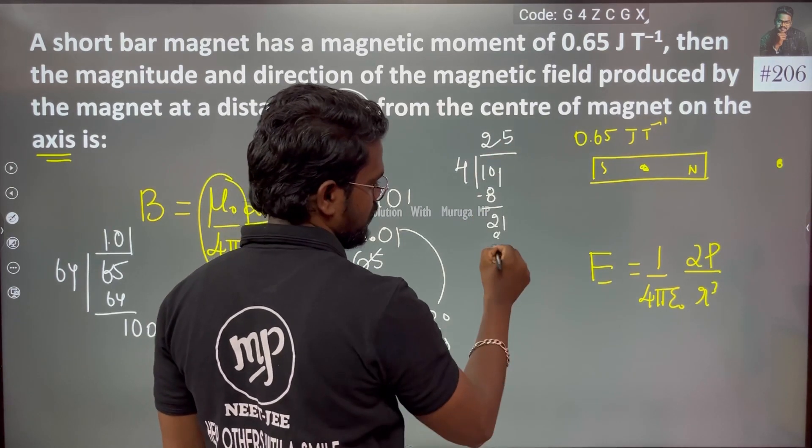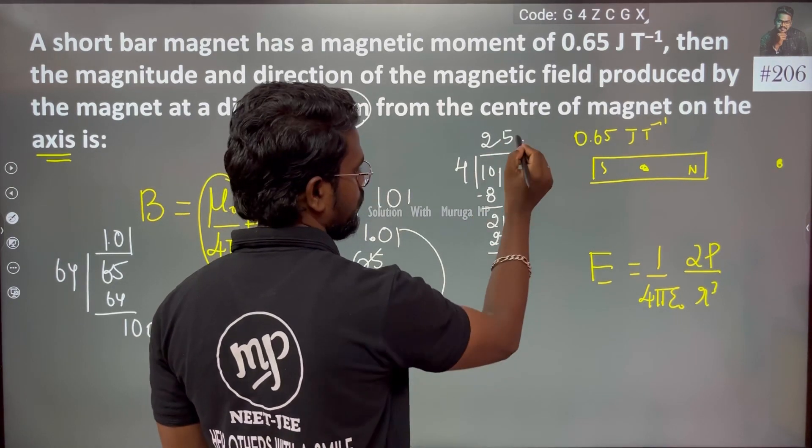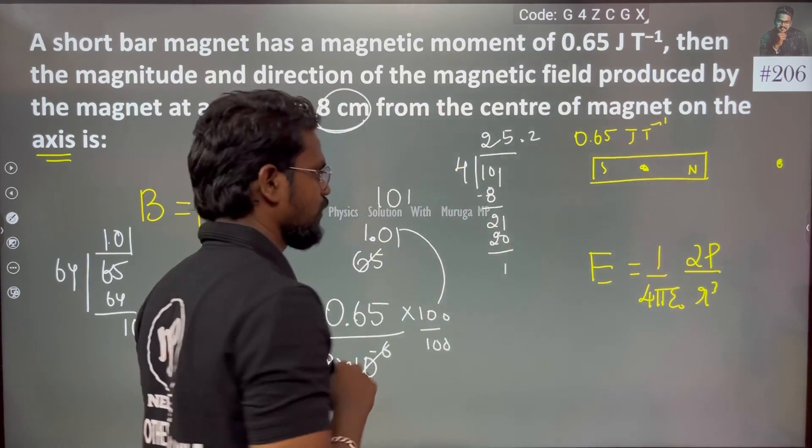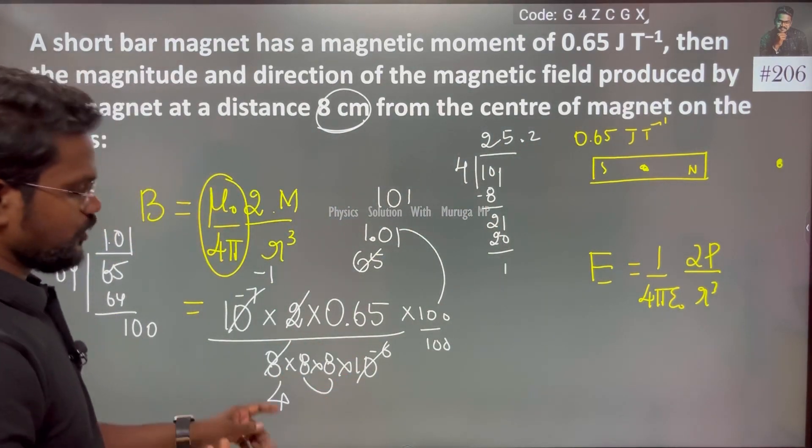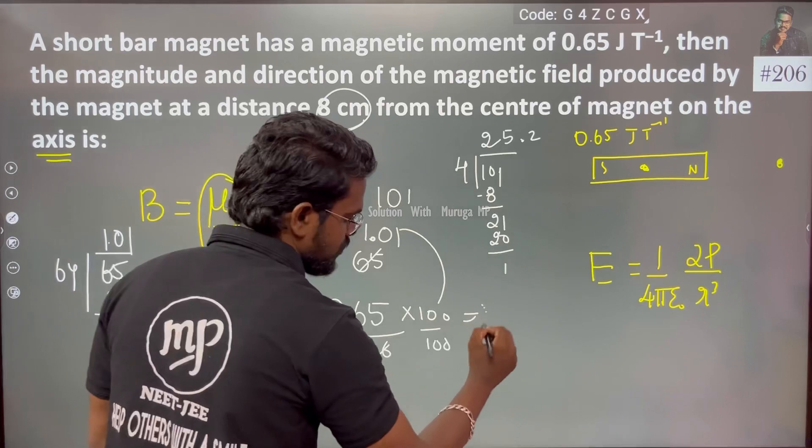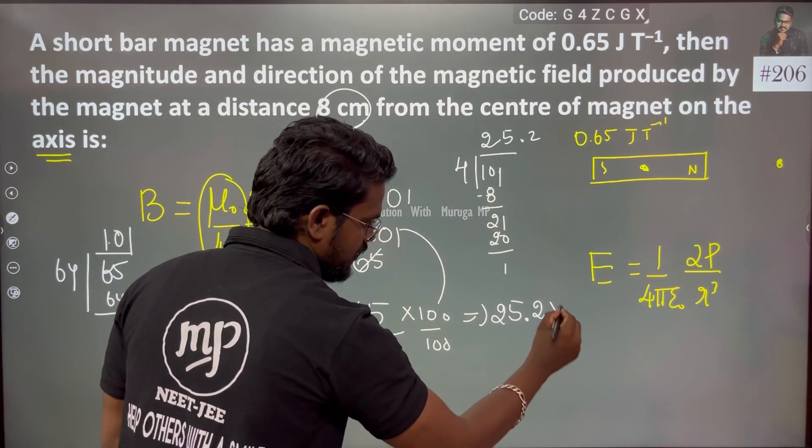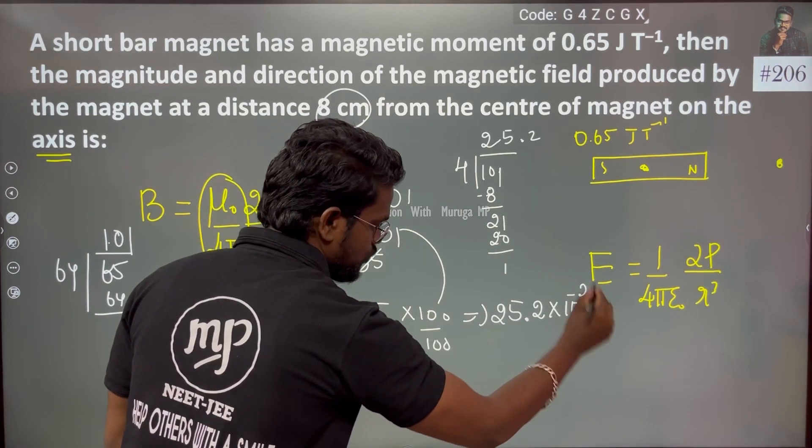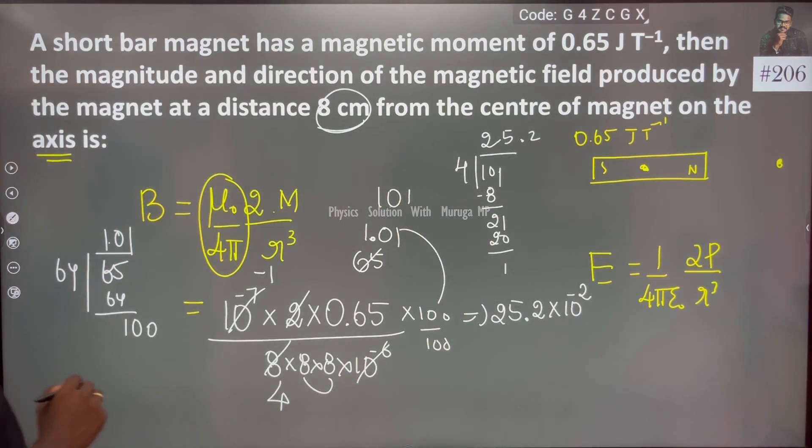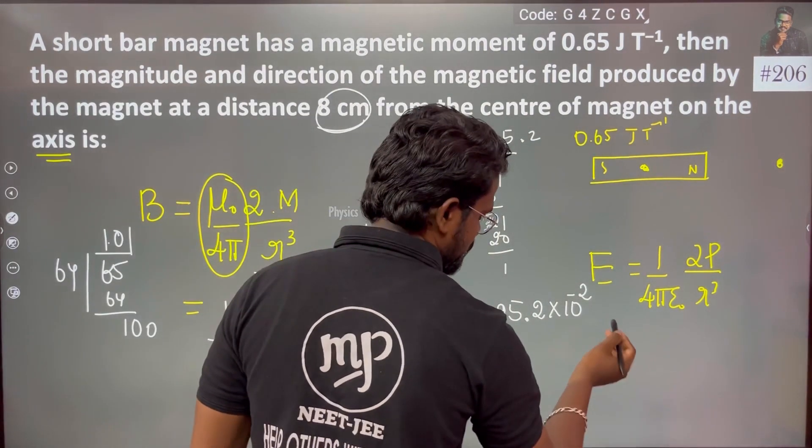And 0.25, 25.2 into 10 to the power minus 2. Correct, it is a magnetic field so obviously, tesla.